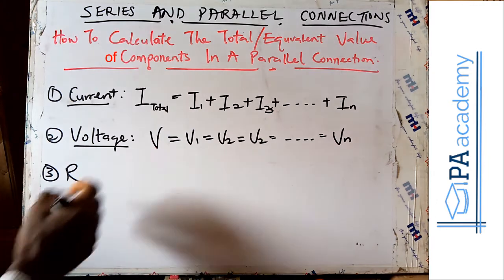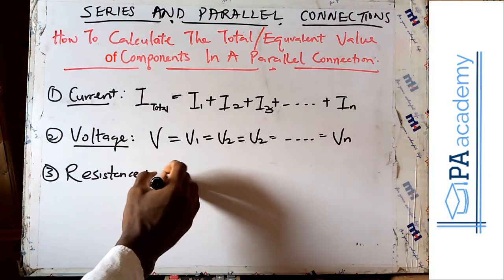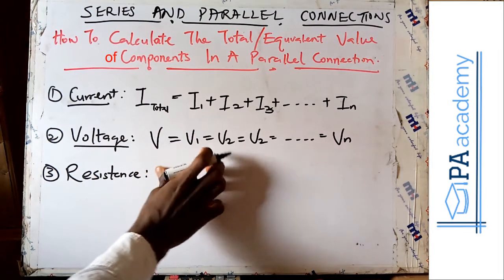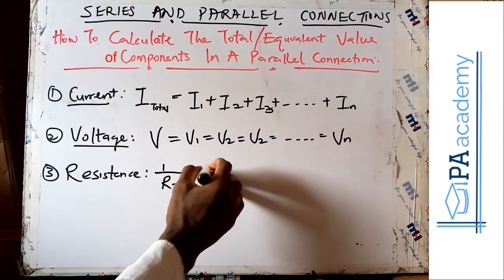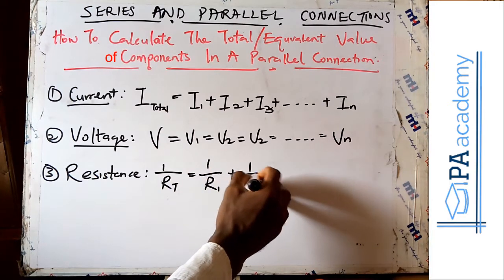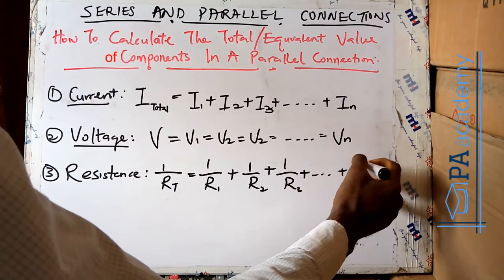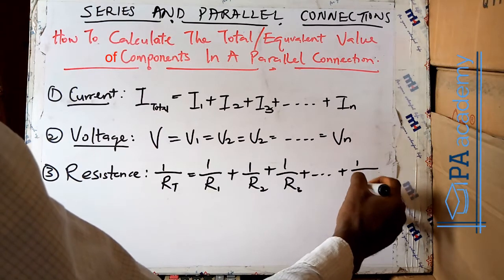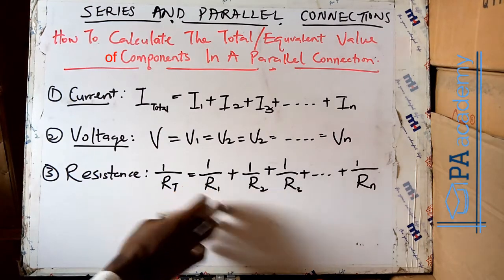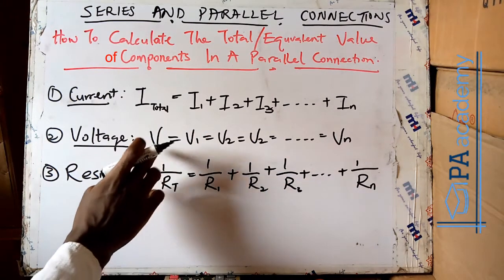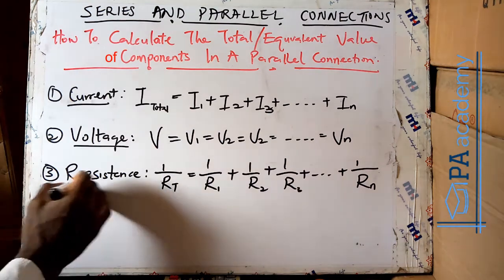Now let's look at resistance. If you have to get the total resistance in a parallel circuit, you are going to use the reciprocal formula: 1 over R_total is equal to 1 over R1 plus 1 over R2 plus 1 over R3, and so on, depending on how many resistors we have in the circuit. With that, you'll be able to get the equivalent resistance in the circuit.